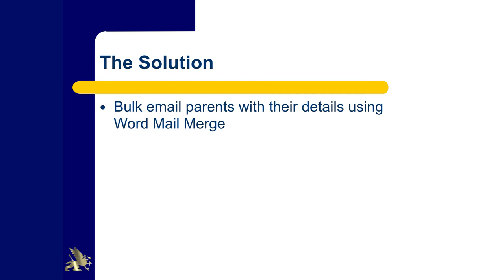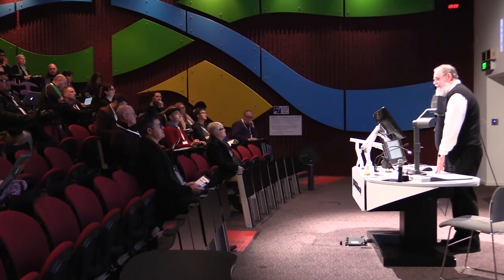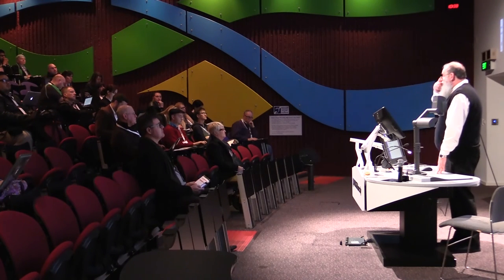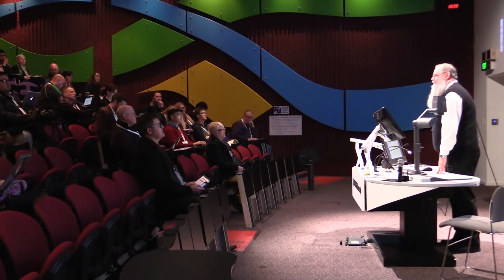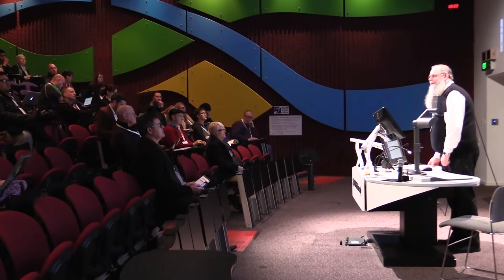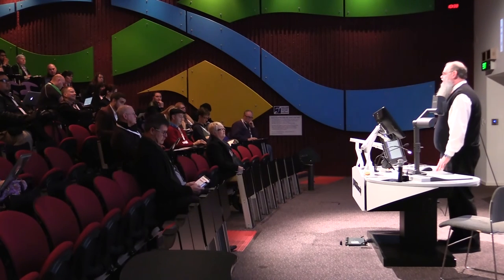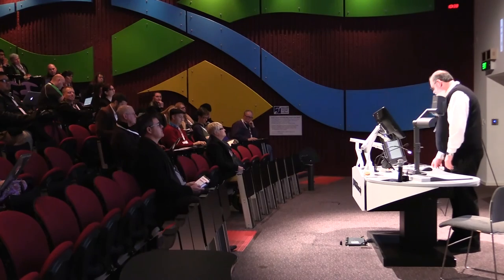We then sent an email to every parent for whom we created an account. We used the original CSV file with a Word mail merge, creating a letter welcoming them to our Moodle site, explaining what they can do, and providing their username and password. Then we did a bulk email to every parent. Be warned: if email addresses are incorrect — and many are — you'll get several days of bounced emails filling up your inbox, so try to get them as accurate as possible.